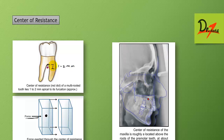The furcation is the point of division of the roots. The center of resistance is one to two mm apical to the furcation. The center of resistance of the maxilla is roughly located above the roots of the premolar teeth.